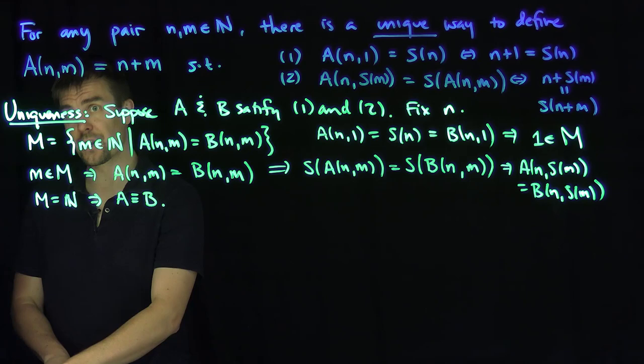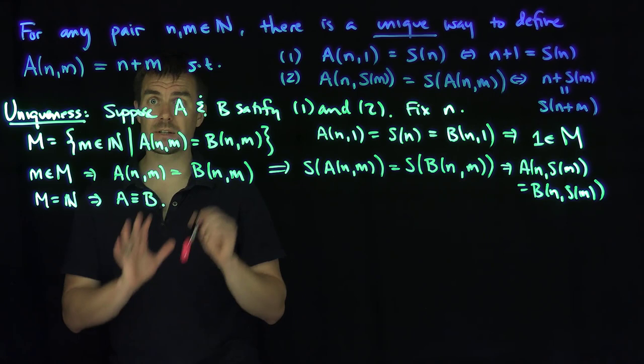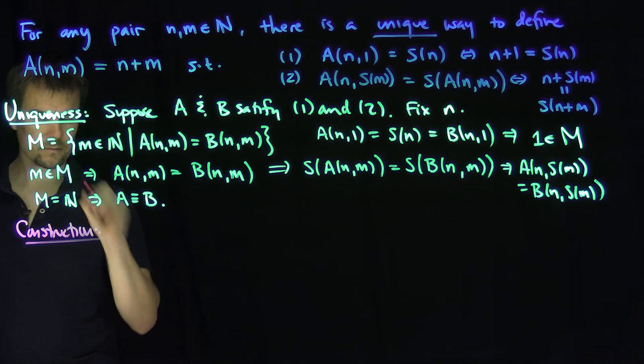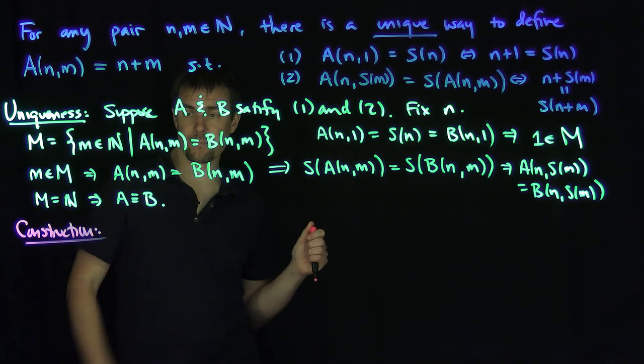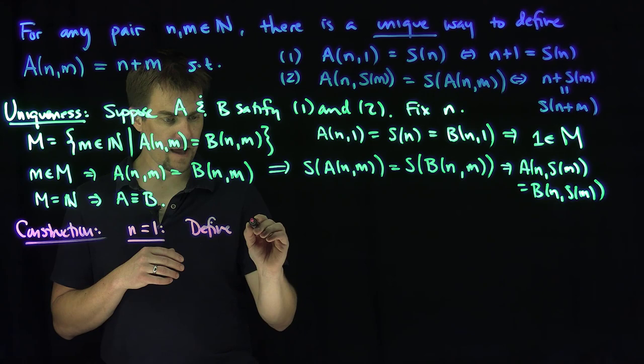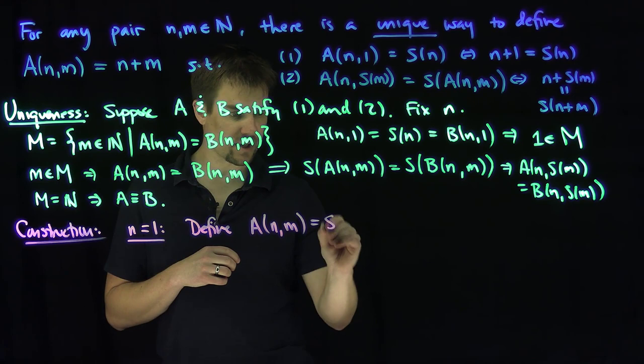Now let's proceed to the construction of our addition operation. It's important to focus on the properties of this construction because they are going to force other properties onto addition. So here's the construction. We'd like to define addition for all n and m, so let's do this in two phases. If n equals 1, we define A(n,m) to be the successor of m. This is our definition of addition when n equals 1.